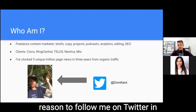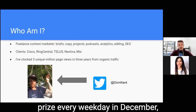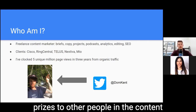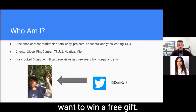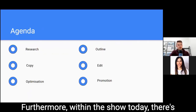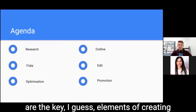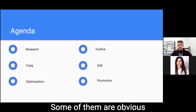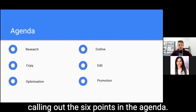Follow me on Twitter — in December I'm giving away a content marketing related prize every weekday, a bit of an advent calendar. Last year I gave away about two and a half thousand pounds worth of prizes that others in the content marketing community contributed. There are six key elements I want to pull out for creating a post that ranks high for organic traffic — some obvious, some not — and we'll dig into each one.